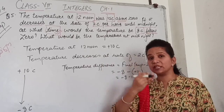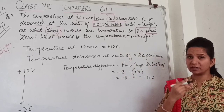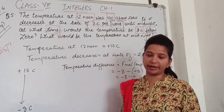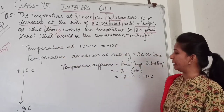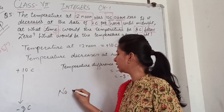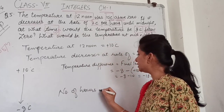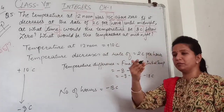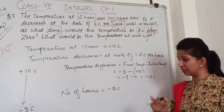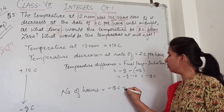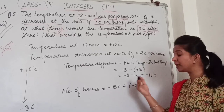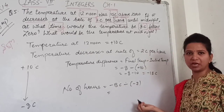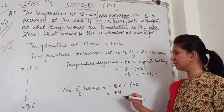So from 10 degrees Celsius, if we decrease at 2 degrees Celsius per hour, we need to find how many hours it will take. The number of hours will correspond to minus 18 degrees Celsius change. So we will divide minus 18 by minus 2. We have learned the concept of division: minus minus is plus, and 18 divided by 2 is 9.